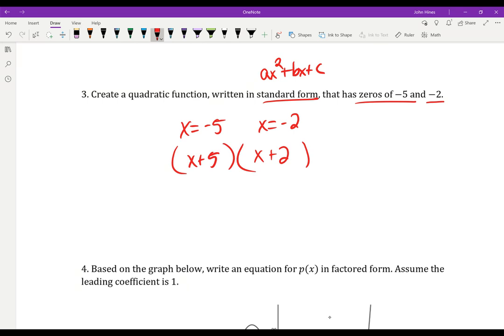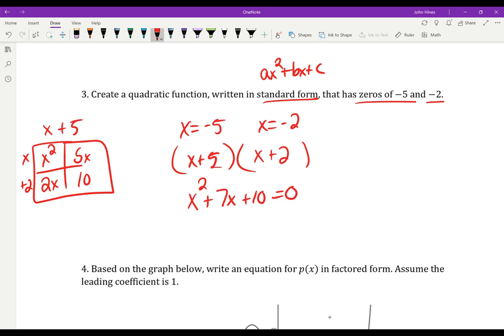Well, that's not standard form. I have to make a box over here. x plus 5, x plus 2. x squared, 5x, 2x, and 10. So my equation is really x squared plus 7x plus 10 equals 0. Hopefully you realize that this middle number is the sum, what adds to, and that last number is the product, what multiplies to.